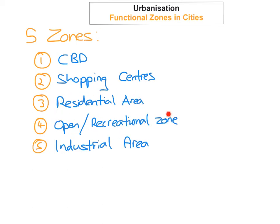The fourth functional zone is the open space and recreational zone. This is basically the space that's allowed for leisure activities. An example of this in Dublin would be Marley Park, the Phoenix Park, or St. Stephen's Green, where many recreational and leisure activities will take place.